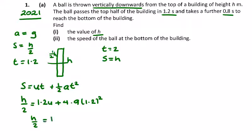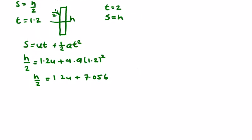...is equal to 1.2u plus 4.9 by 1.2 squared, which is 7.056. And if we multiply this by 2 to tidy it up, we're going to get h equals 2.4u plus twice that, which is 14.112. So we have an equation in h and u.